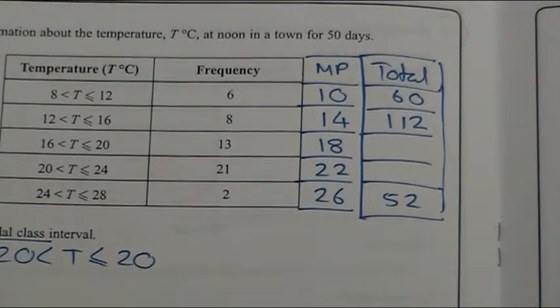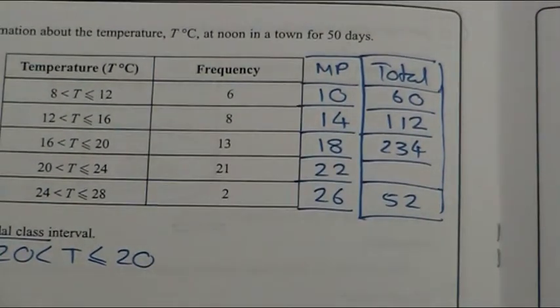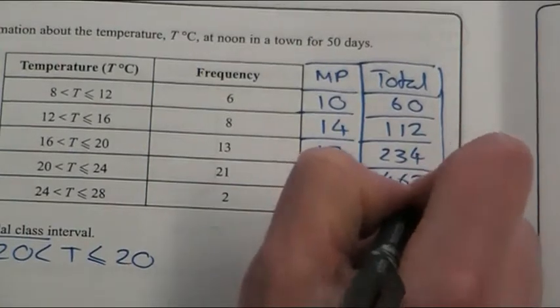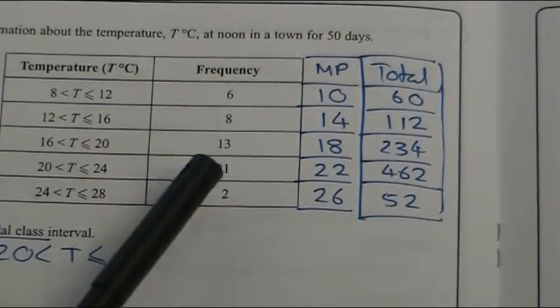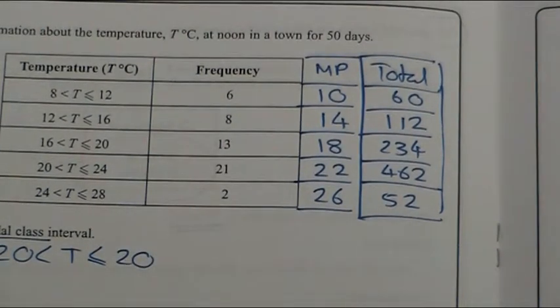So, I'm going to use my calculator to work out the rest. 13 times 18 is 234, and 21 times 22 is 462. The shortcut is to times these two, because if it was 22 degrees centigrade 21 times, times them to work out what the total was.